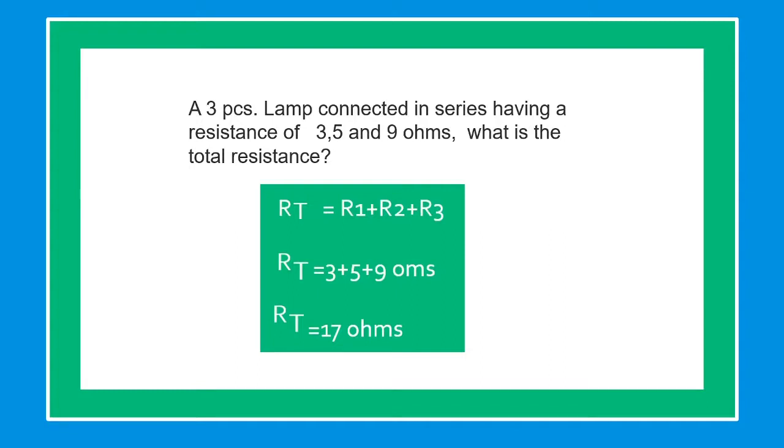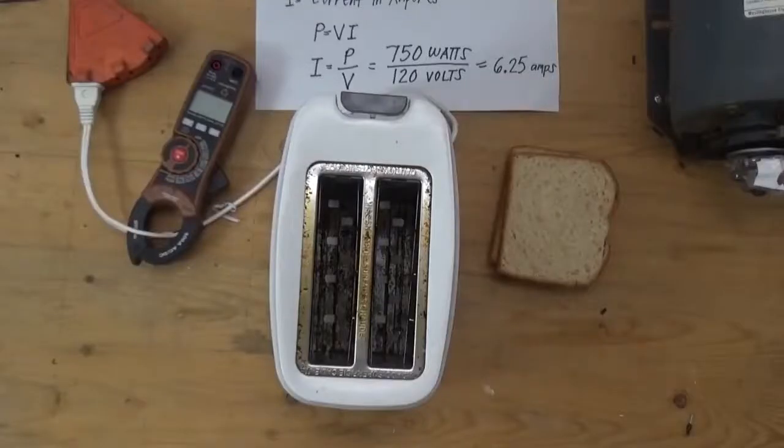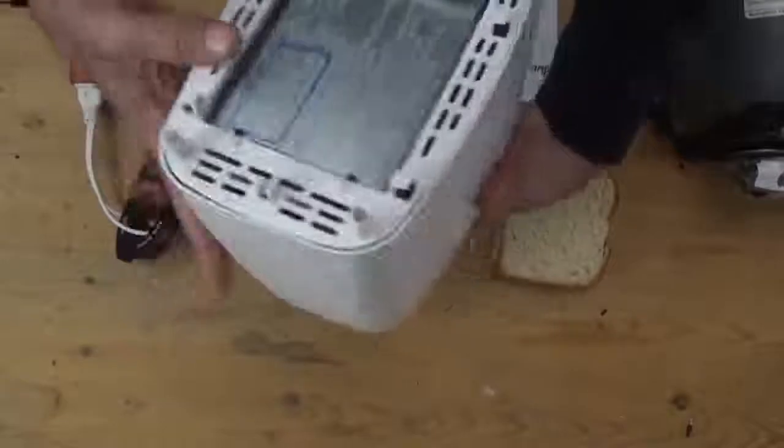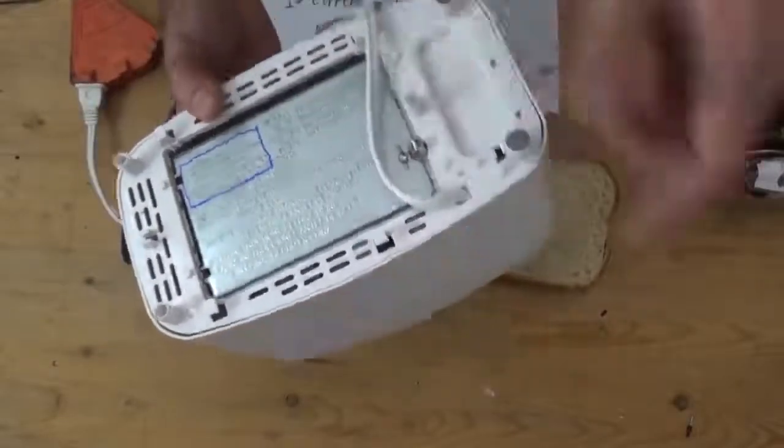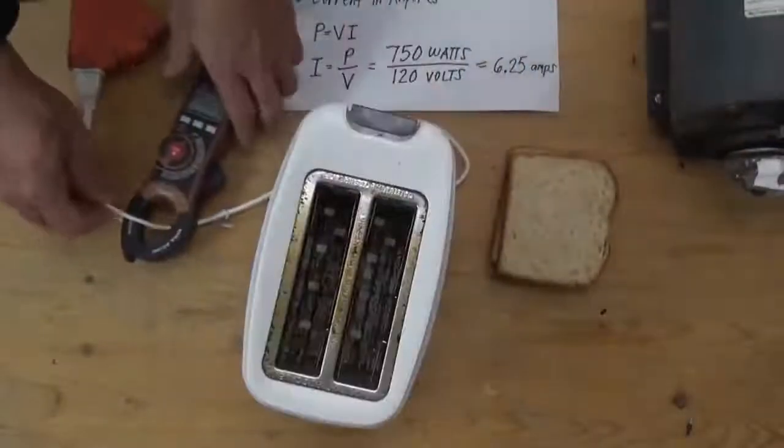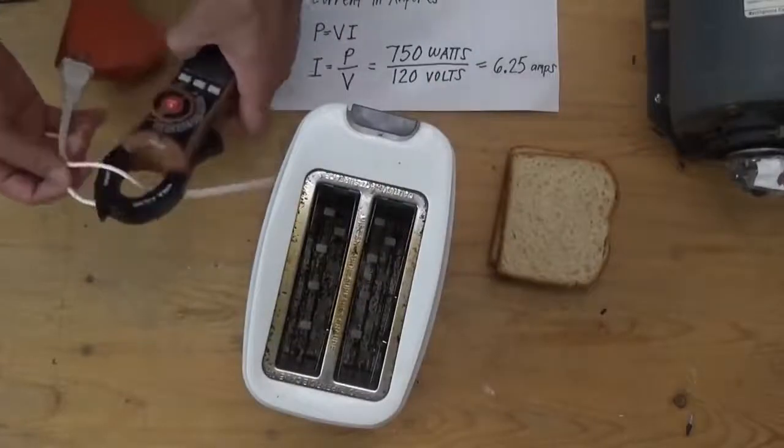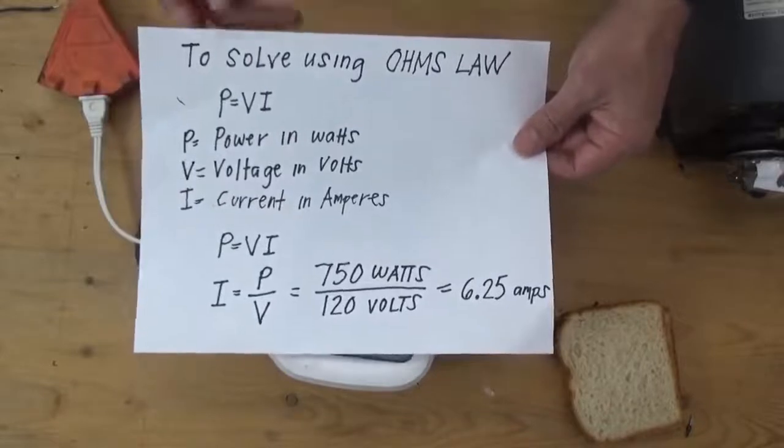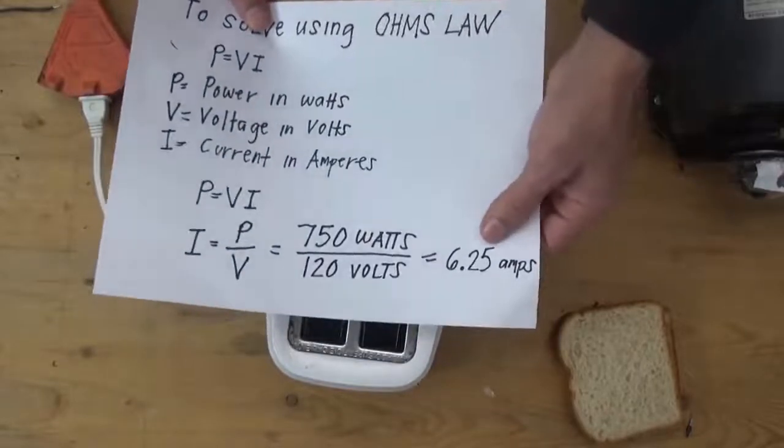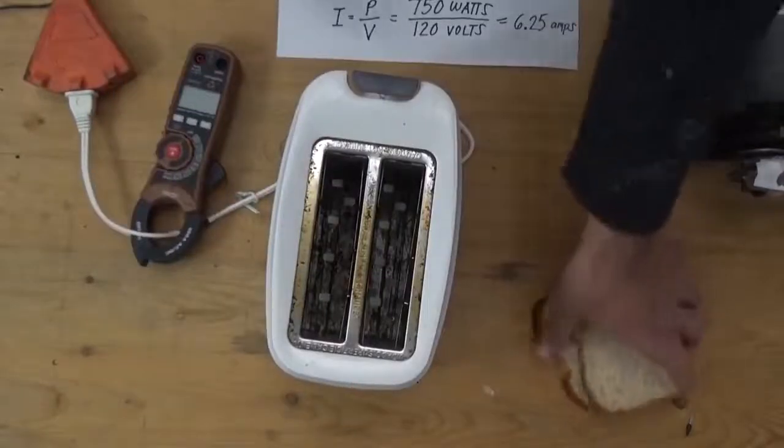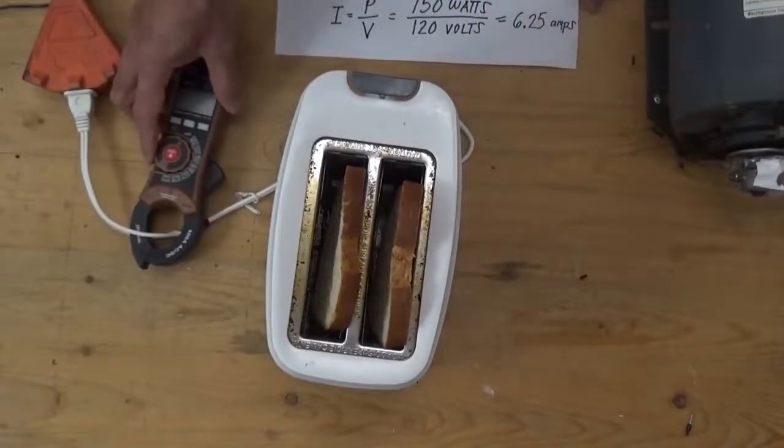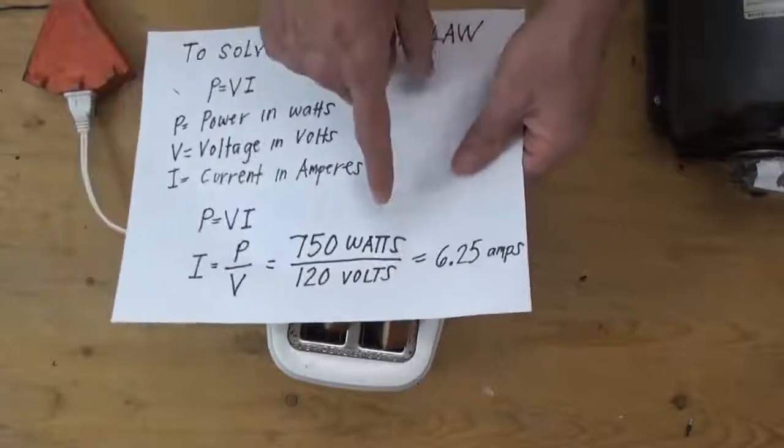Welcome to Ohm's Law practical exercise. Here we have a bread toaster with a rating of 750 watts and 120 volts. And I have here connected in series my clamp ammeter. We are going to prove our computation if our current is 6.25 amps. And I have bread here that we are going to toast.